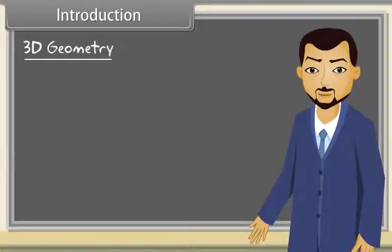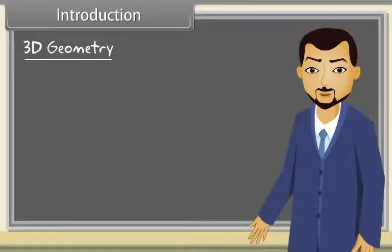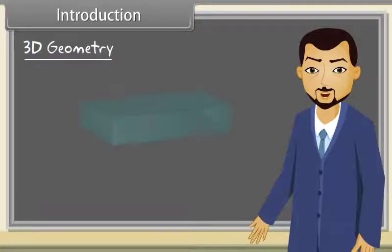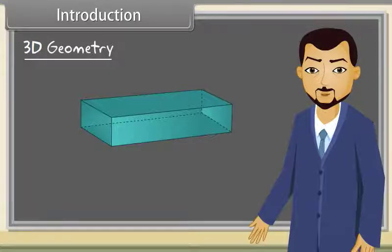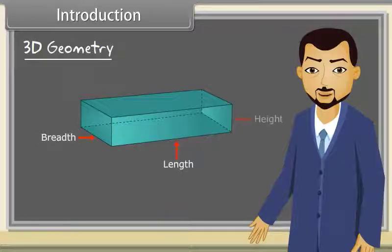Yeah, you are right. You are probably familiar with two-dimensional Cartesian geometry by now — that is, planar geometry. With this, we will learn about three-dimensional space or solid geometry. Real-world objects exist in three dimensions. For example, a cuboid or a box is completely described by three parameters: length, breadth and height.